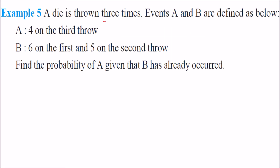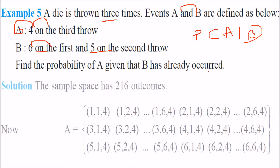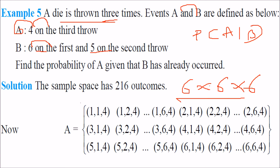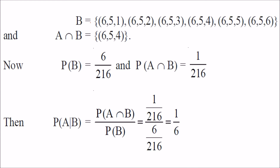A die is thrown three times. Event A: 4 on the third throw. Event B: 6 on the first and 5 on the second throw. Find P(A|B). Total outcomes = 6×6×6 = 216. B fixes the first two throws (6 and 5), with the third throw free, so B has 6 outcomes. A∩B fixes all three throws as (6, 5, 4), giving 1 outcome.